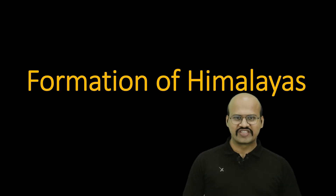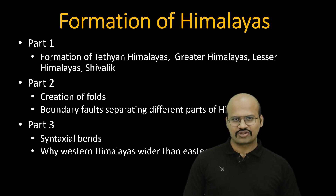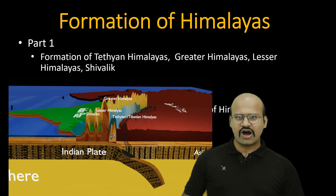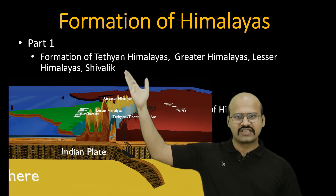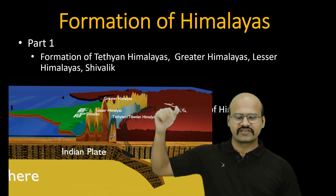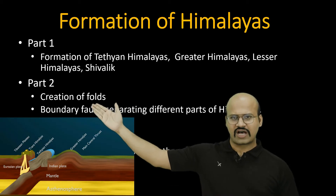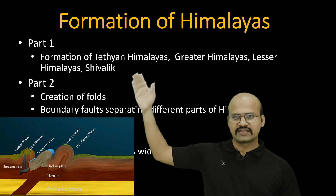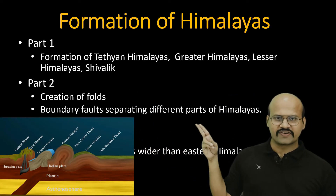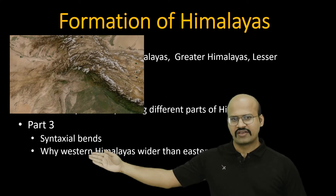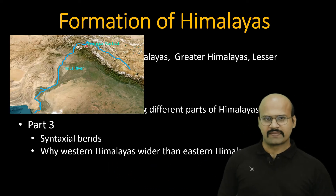Welcome to another video of Zeta Axis. Today we will discuss the process of formation of Himalayas, divided into three parts. In the first part we will see how different parts of Himalayas were formed — the Tethian Himalayas, Greater Himalayas, Lesser Himalayas, and Sivaliks. In the second part we will see what faults are and what boundary faults separate these different parts. In the third part we will see what syntaxial bands are and why Western Himalayas are wider than Eastern Himalayas.